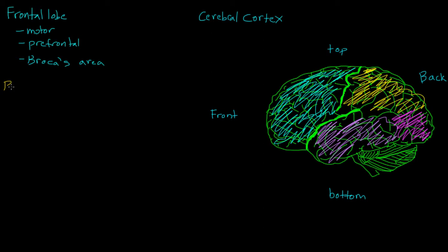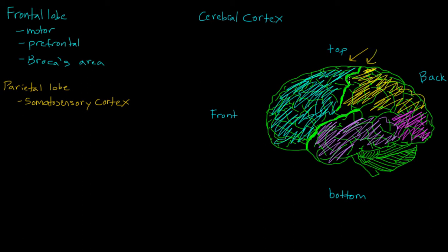Let's move on to the yellowish-orange parietal lobe. One important part is the somatosensory cortex — this is the part of your brain associated with physical feeling, receiving information from all over your body about touch, pressure, temperature, and pain. So while the motor cortex helps us reach forward and grab a cup of coffee, the somatosensory cortex lets us feel the pressure of that cup or how hot it is. These two areas are actually right next to each other — the motor cortex is on one side of a crevice in the frontal lobe, and the somatosensory cortex is right next to it in the parietal portion. Together, they can be thought of as the sensorimotor cortex.